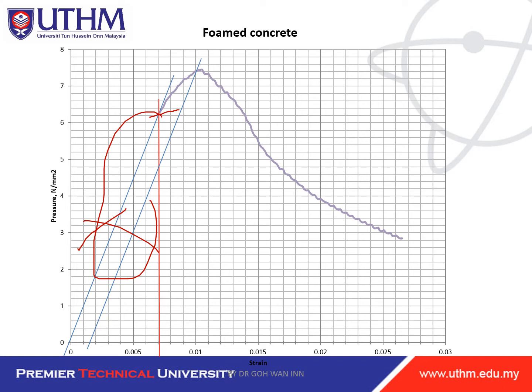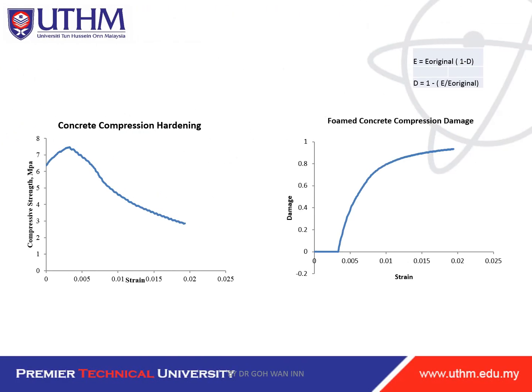What we have to do is move the inelastic strain to start from zero — remove the elastic strain so we are left only with the inelastic part. Sort your experimental data so the inelastic strain starts from zero. Then from this shifted graph you calculate the inelastic strain from zero to ultimate and then through the softening curve. From this curve you will then derive the damage.